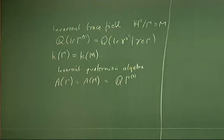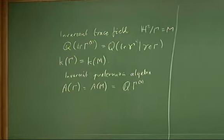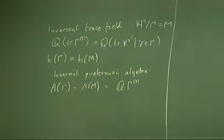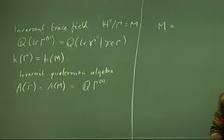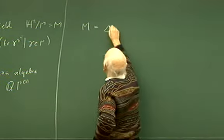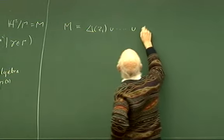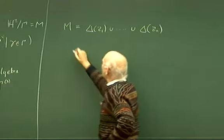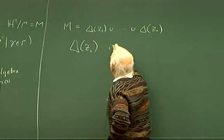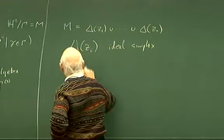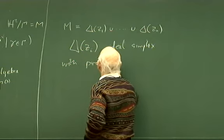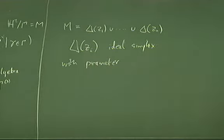Let me start by telling you a nice way of computing the invariant trace field — how snap and snappy actually compute it. You've been told how snap and snappy base their calculations on triangulating M, writing M as a union of simplices. I'll call these simplices Δ(Z₁) through Δ(Zₙ), where Δ(Zᵢ) is an ideal simplex with simplex parameter Zᵢ in the sense that Craig Hodgson described.